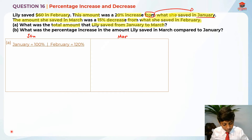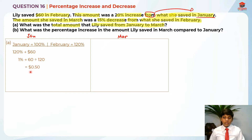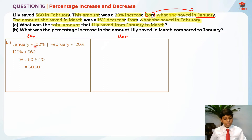We know that February is 120%, and 120% equals $60. So let's find 1%, which is 60 divided by 120. Remember, don't put an equal sign — put an arrow mark. So 60 divided by 120 gives us $0.50, or 50 cents. After that, we need to find January, which is 100%. So 100% is 0.50 times 100, which gives us $50 for January.